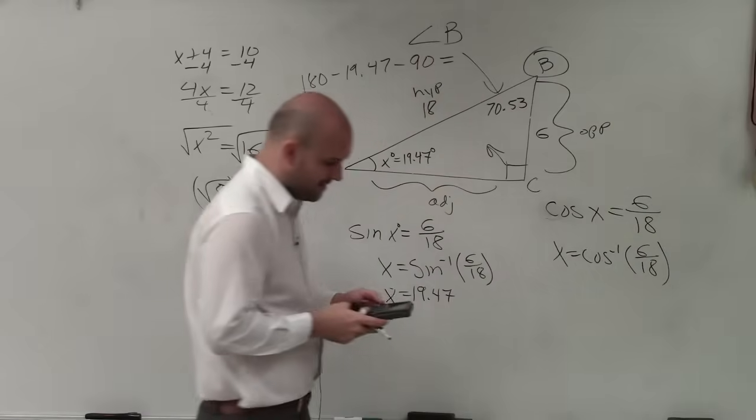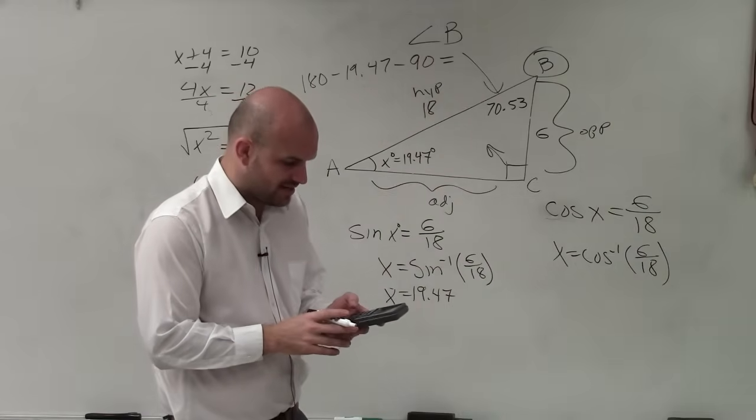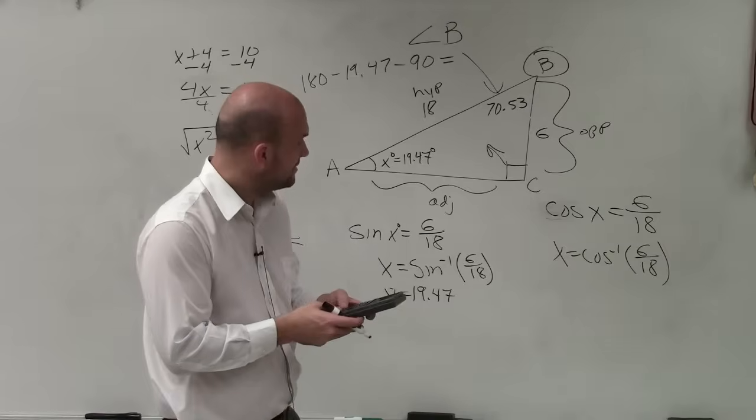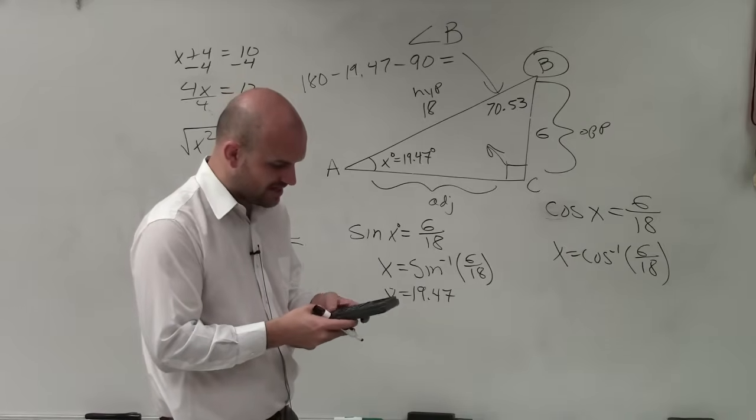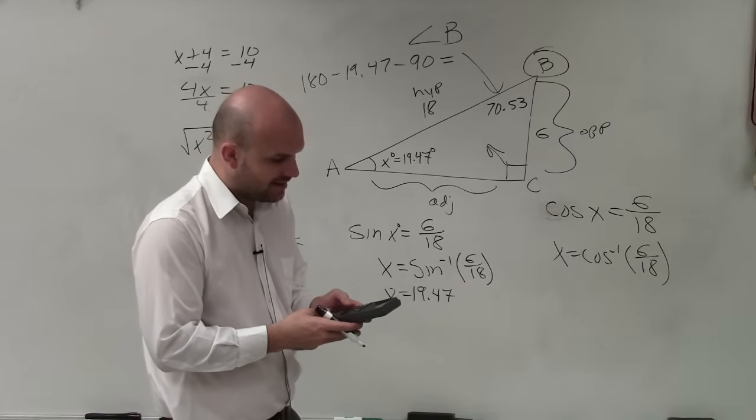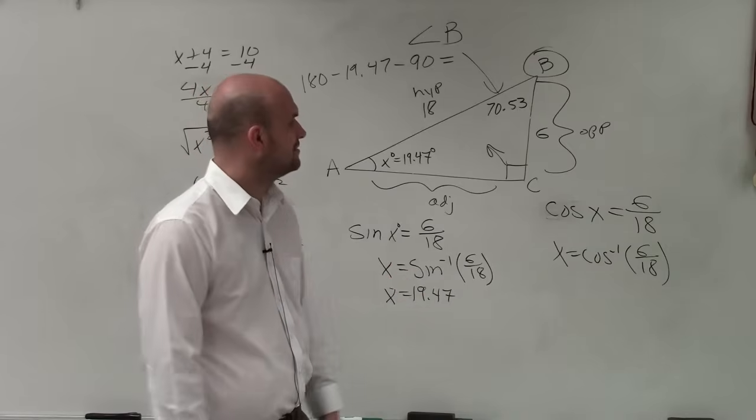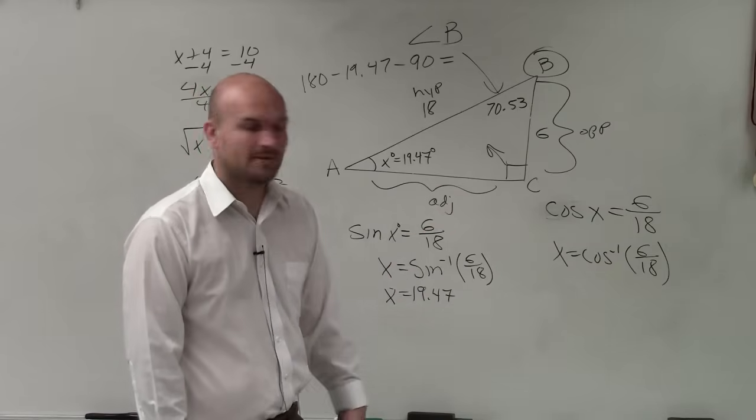Yeah, I'll show you in just a second. So then I just do second cosine of parentheses, or I'm sorry, 6 divided by 18. And when doing that, I get 70.53. Done.